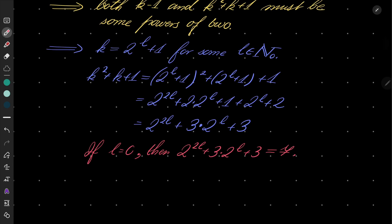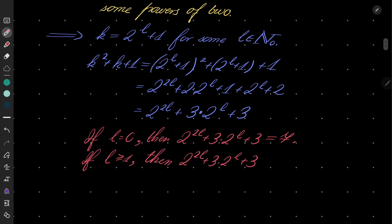And if l is greater than or equal to 1, then 2 to the power 2l plus 3 times 2 to the power l plus 3, notice that this is even, this part is also even, but the sum of two even numbers plus 3 is odd.